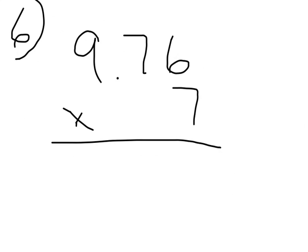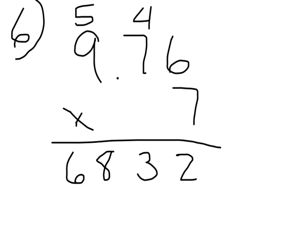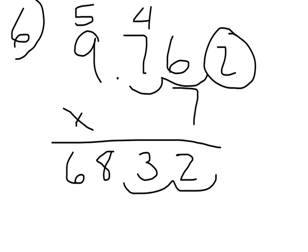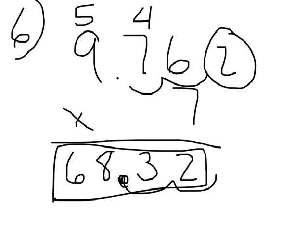Now you try one completely on your own. What's 9 and 76 hundredths times 7? Let's see how you did. 7 times 6 is 42. 7 times 7 is 49, plus 4 more is 53. 7 times 9 is 63, plus 5 is 68. 1, 2 numbers go behind the decimal. So the answer is 68 and 32 hundredths.